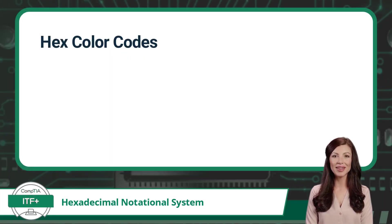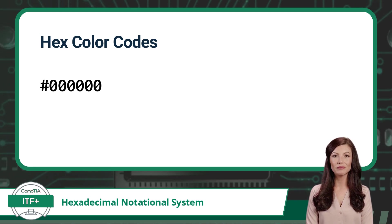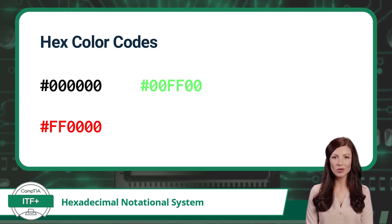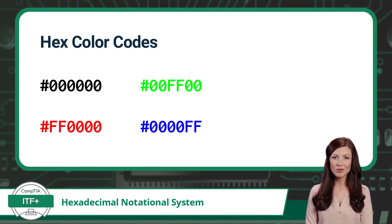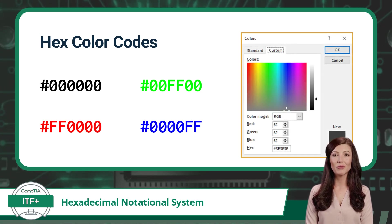Hex color codes use six hexadecimal characters to specify a color. These color codes start with a hashtag. The first two hex characters represent the red value, the middle two represent the green value, and the last two represent the blue value. Each color value varies in intensity on a scale of 0 to 255, or in hexadecimal from 00 to FF. When combined, these three values can create over 16.7 million possible colors.